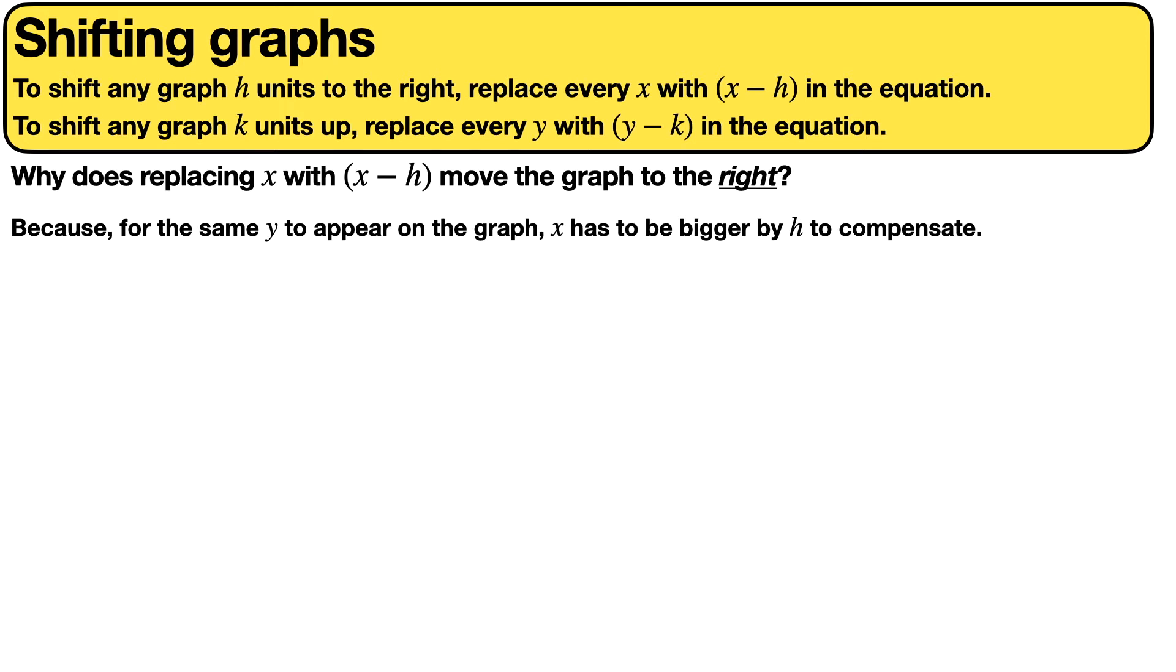Students often find this confusing because they're used to associating subtraction with moving to the left, so the question is why does replacing x with (x-h) move the graph to the right? Because for the same y to appear on the graph, x needs to be bigger in order to compensate.